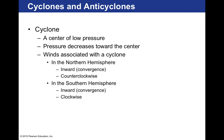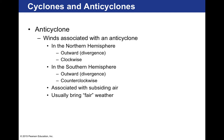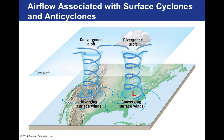A cyclone is a center of low pressure where pressure decreases towards the center. Winds associated with a cyclone are counterclockwise in the northern hemisphere but clockwise in the southern hemisphere. In the United States — the northern hemisphere — cyclones move counterclockwise. An anticyclone in the northern hemisphere moves clockwise and is associated with subsiding air and fair weather.